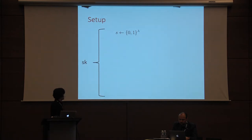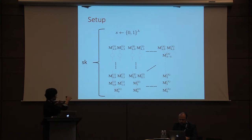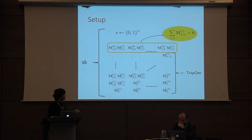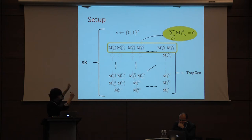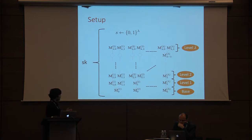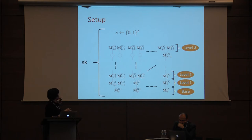In setup, we have a lambda-bit string s sampled uniformly at random, and a bunch of matrices and trapdoors. For each node in the strand structure, we sample a matrix. All but the top-level matrices are sampled using the TrapGen algorithm. The top-level matrices are sampled with the special property that if you pick the matrices corresponding to bit s_i and sum those together, they should sum to zero. I will refer to these matrices as level one, level two, through level lambda, and call the base-level matrices level zero.